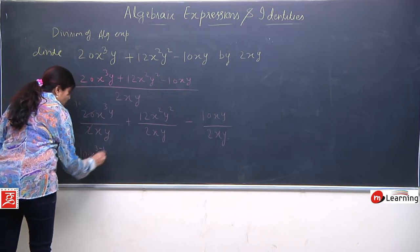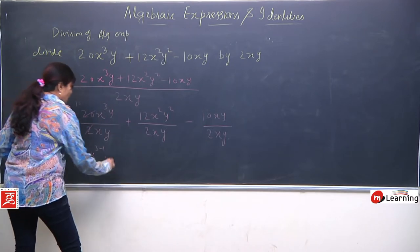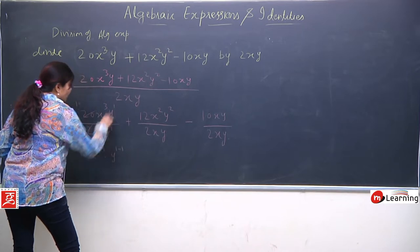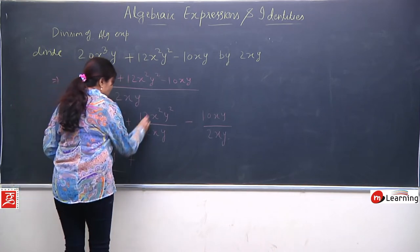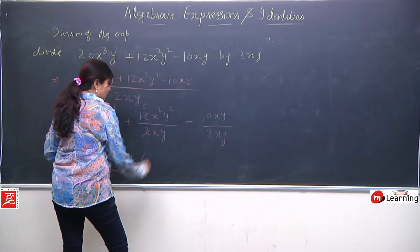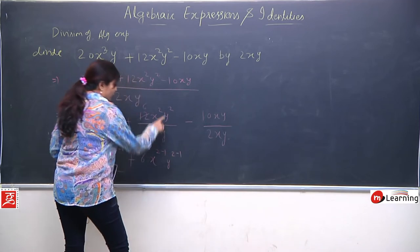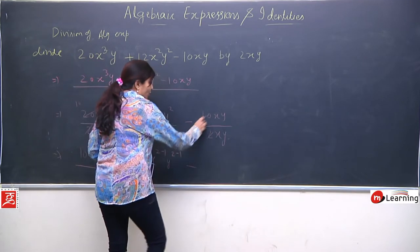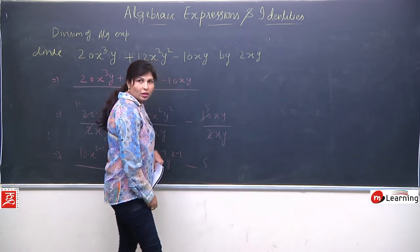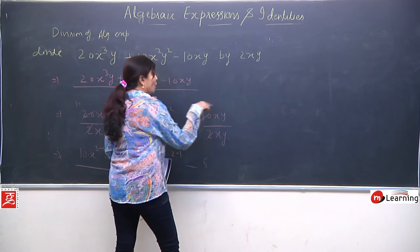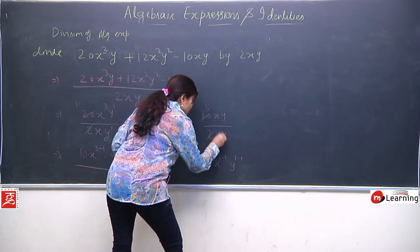Kyunki inke beech mein koi sign nahi hota, matlab multiply hote hain. Aap dekhiye — yahan par aapke paas do tarike hain: either you can cancel directly yy, or you can write power will be subtracted. Dono ka meaning same hai. To 6 the 12, giving 6. x to the power 2 minus 1, y to the power 2 minus 1. Similarly minus term mein: 5 the 10 — aap chahe to xy cancel out kar sakte hain kyunki same hain, ya aap power subtract kar sakte hain.